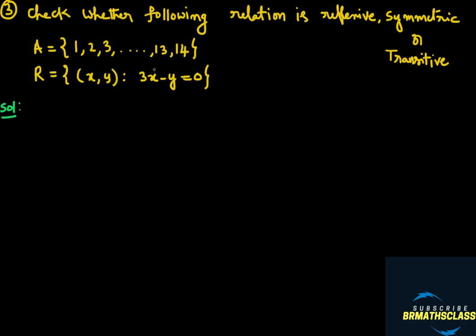In this problem we will check whether the given relation is reflexive, symmetric, or transitive. The relation R is a relation on set A. You observe here they have given that R is a relation on set A. Set A is {1, 2, 3, ..., 13, 14} and R is a relation defined as the set of all ordered pairs (x, y) such that the ordered pair satisfies the equation 3x - y = 0.